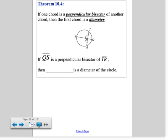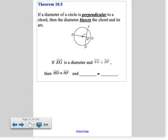The second theorem says that if one chord is a perpendicular bisector of another chord, then the first chord is a diameter. In other words, if QS is the perpendicular bisector of TR in this diagram, then QS must also be a diameter of the circle. So if you have two chords and one is a perpendicular bisector of the other, the first one has to be a diameter.